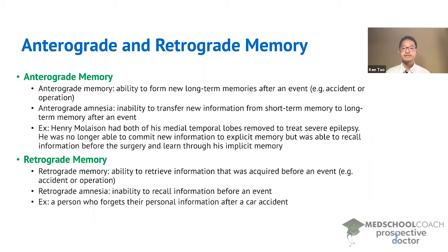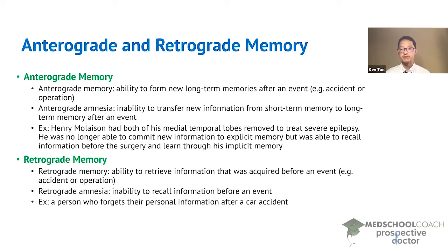A famous example of this is Henry Moliacin. Henry Moliacin had both of his medial temporal lobes removed to treat severe epilepsy when he was young. After the surgery he was no longer able to commit new information to explicit memory. This is enterograde amnesia.